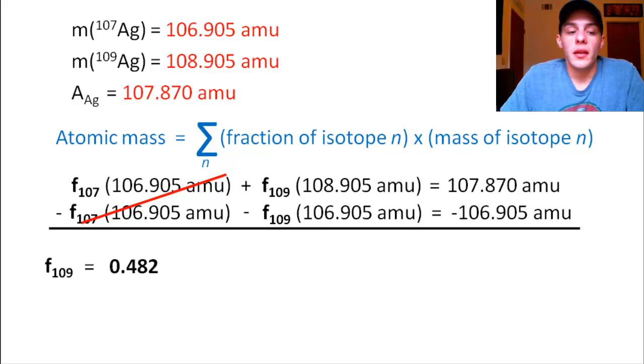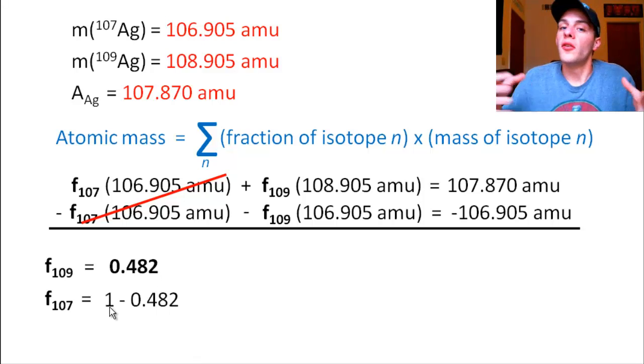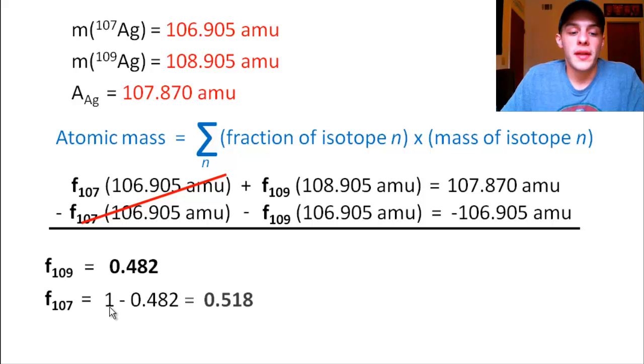Simply by subtracting 0.482 from 1, which again is what the fractions should add up to. They should add up to the whole. So we take 1 minus 0.482 and that gives us 0.518. That is the fraction of silver-107.